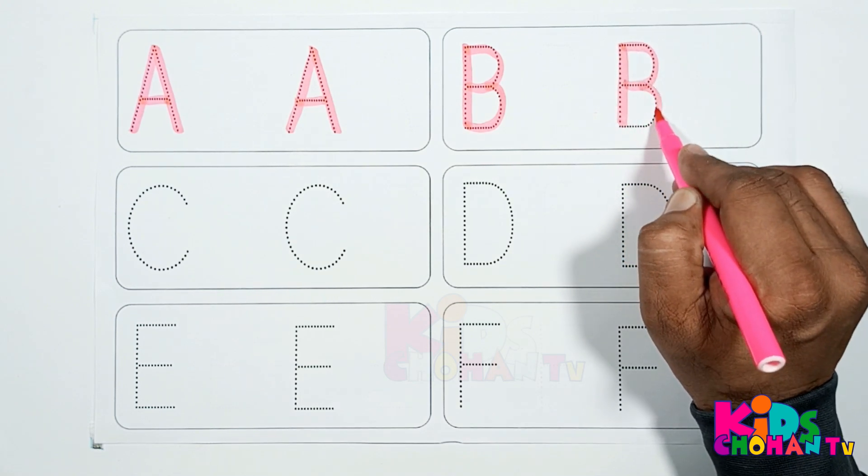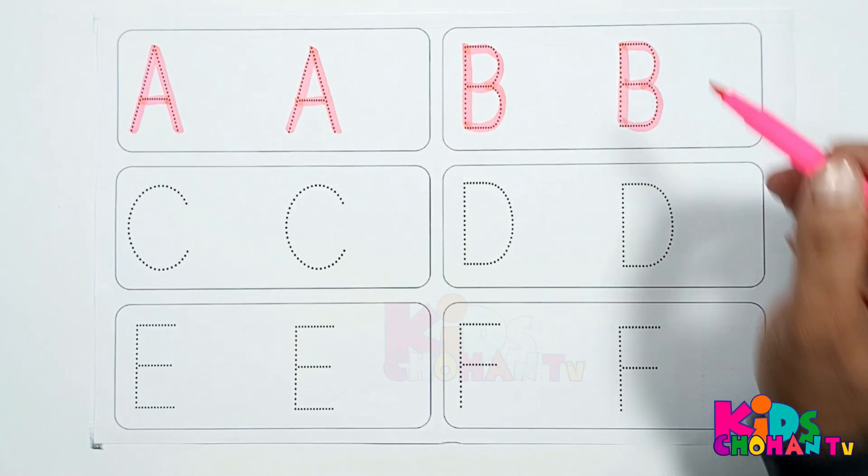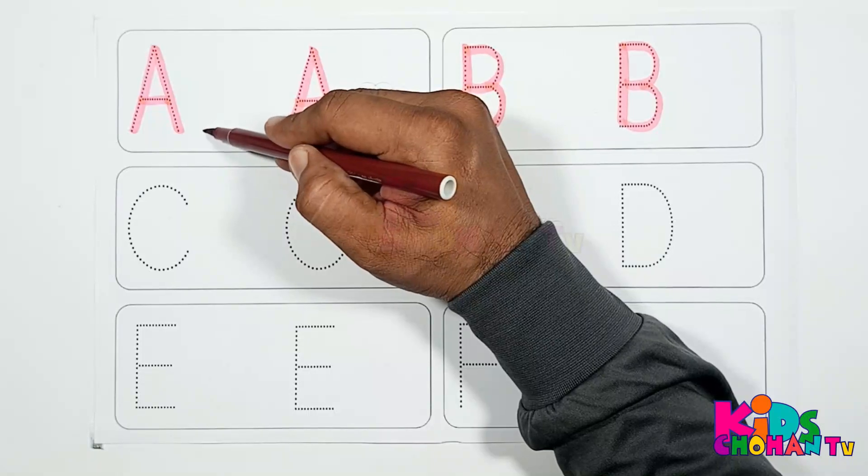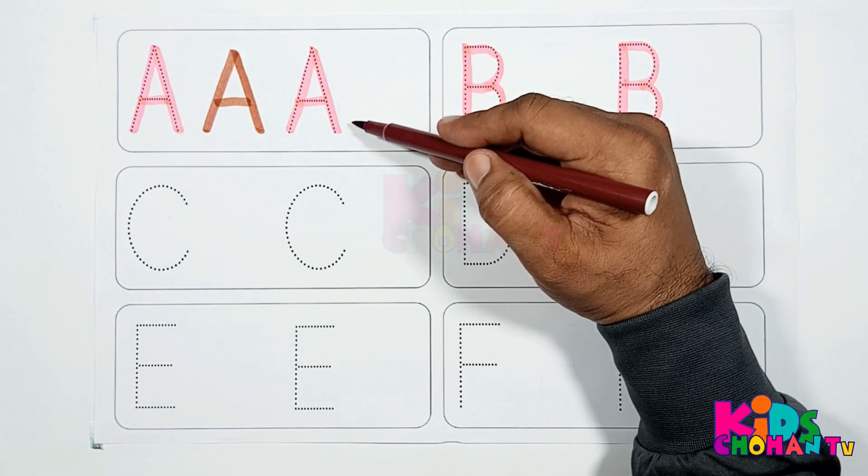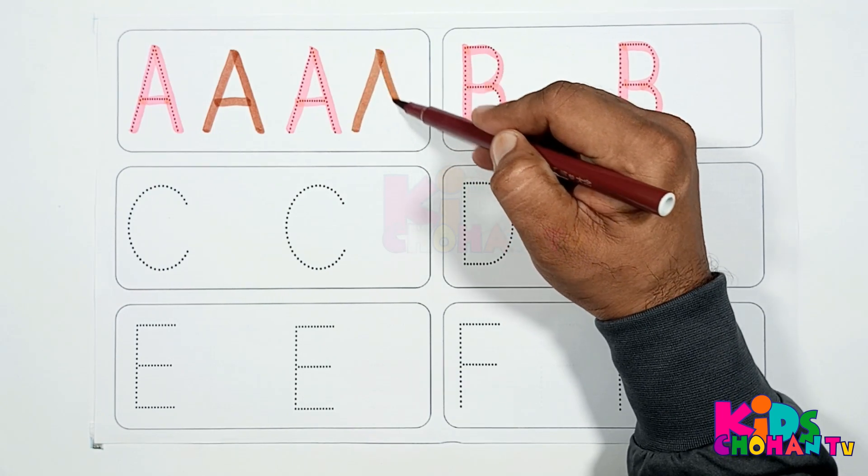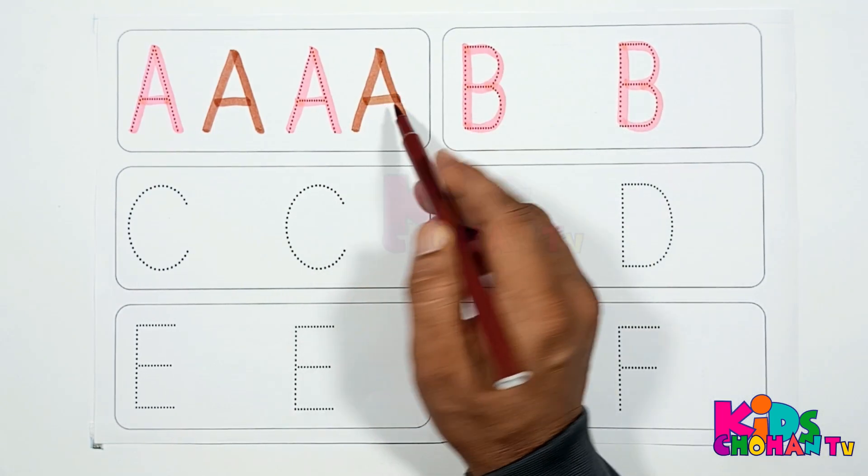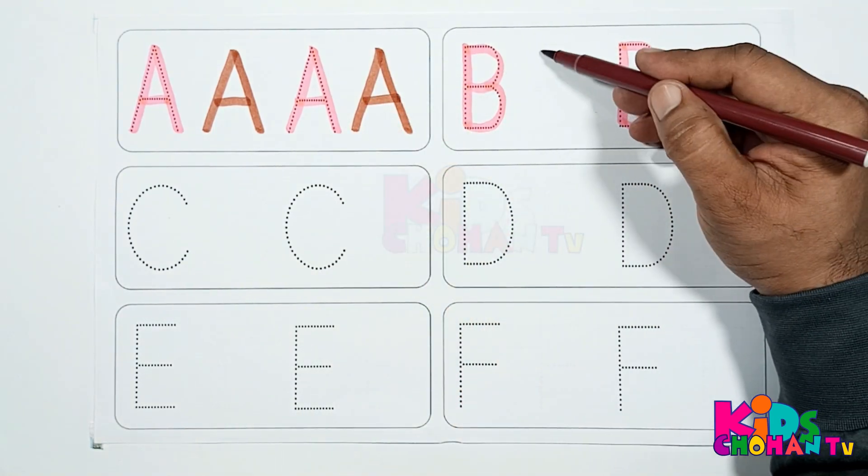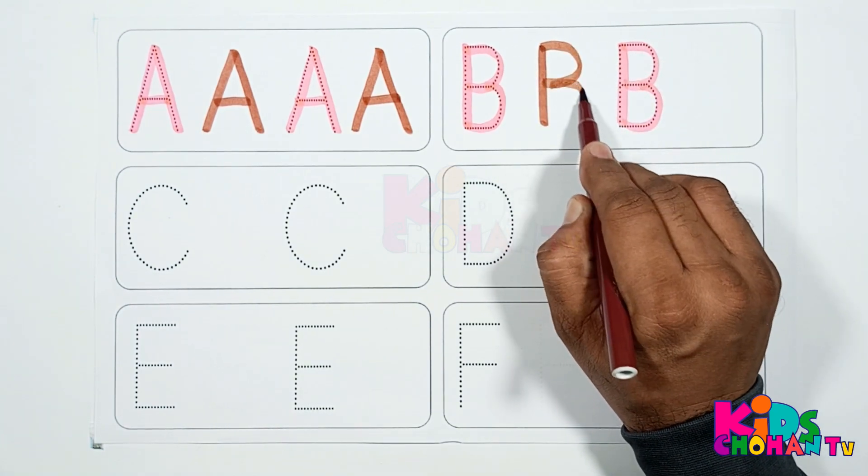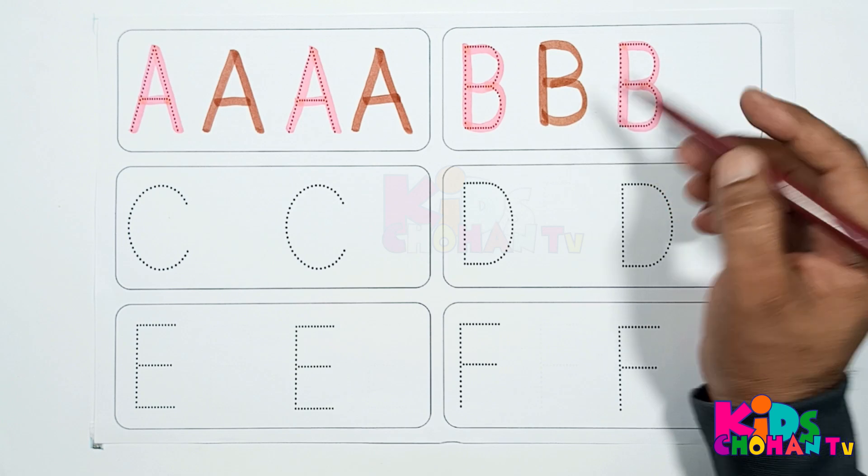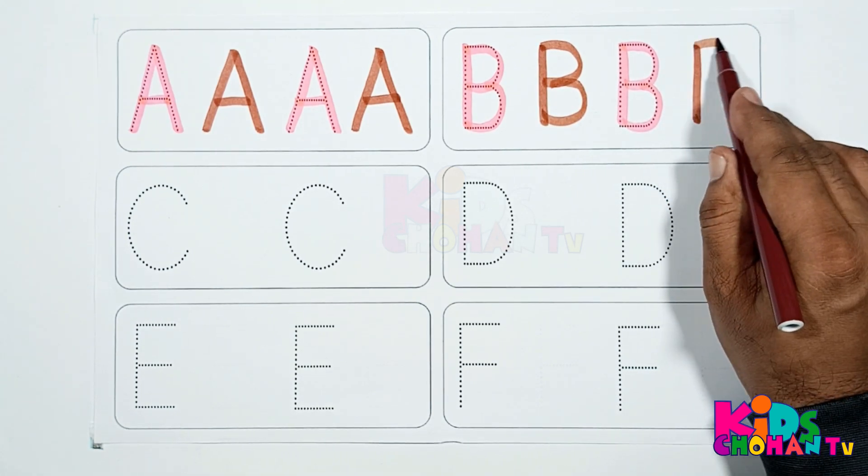Here we are writing letter A. A is for aeroplane. Now here we are dressing letter B. B is for balloon.